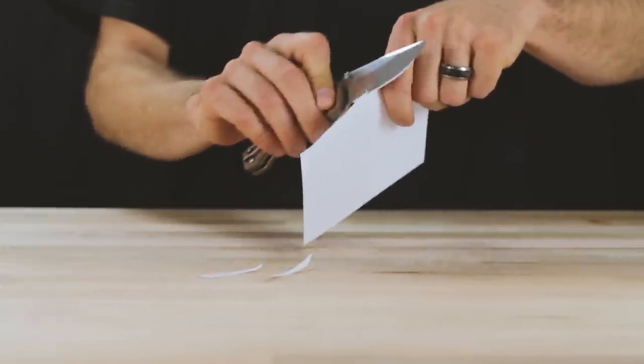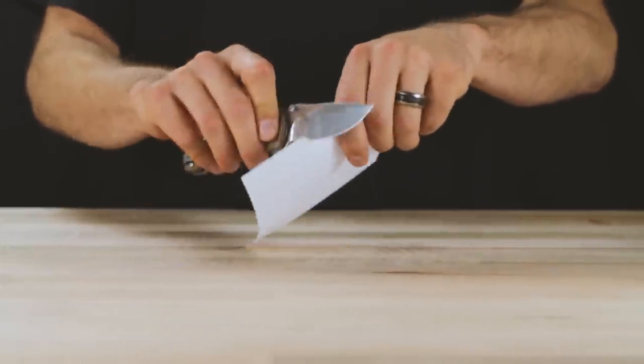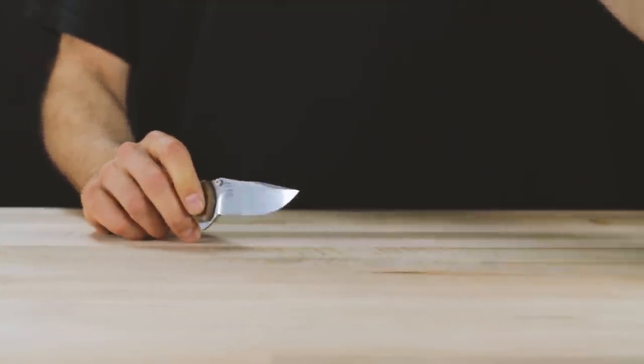Test for sharpness. Not slicing paper? Go back to the coarse step and ensure you get a burr.